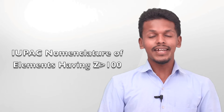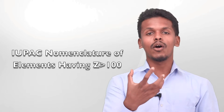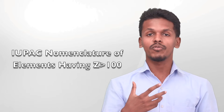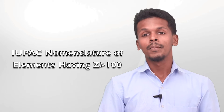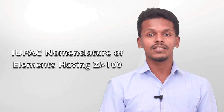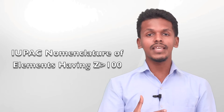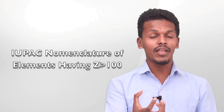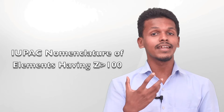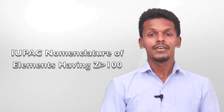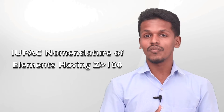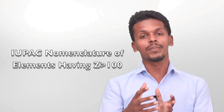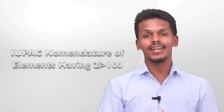Hello friends. When it comes to elements, all elements have a specific name — we could call it a specific IUPAC name — as well as a specific symbol. But when it comes to the IUPAC naming of an element which has an atomic number more than 100, we have particular guidelines for how to give an IUPAC name for that element. Let us see how we can do that.